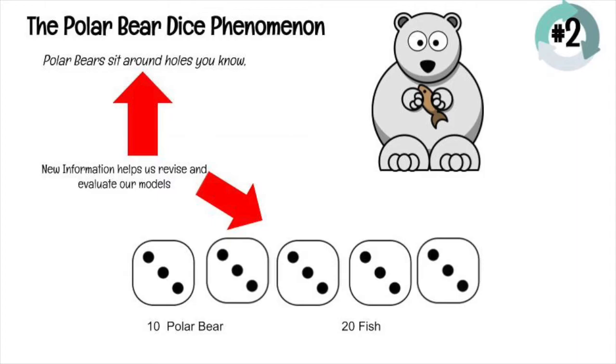Pretend I rolled all five dice again. And this time, at the very top, you got a new clue. It says polar bears sit around holes. So somehow, these five dice represent a hole in some way. And in this case, I rolled all threes. And in all of these threes, there are ten polar bear. So somehow, these dice represent ten polar bear. And somehow, these dice represent twenty fish.